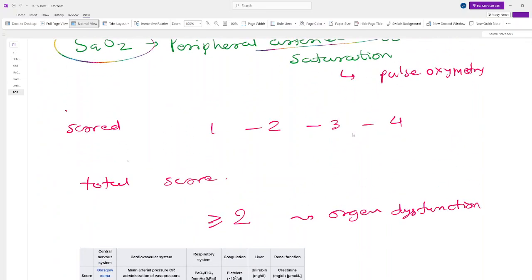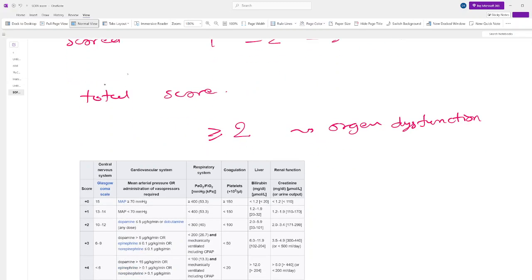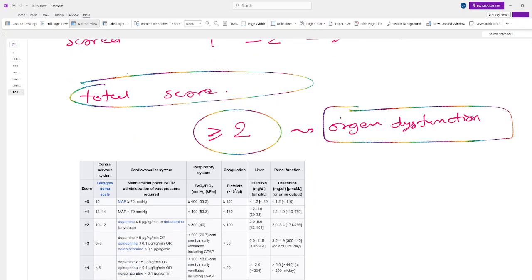All of these parameters are measured and they are scored from one, two, three, four. Then the sum is done, then the total score is obtained. It is said that if the score is either two or more than two, then it is almost a sure sign of organ dysfunction and therefore sepsis.